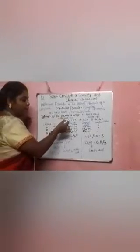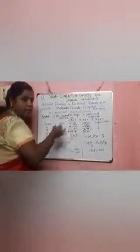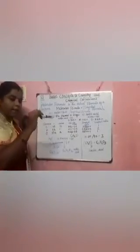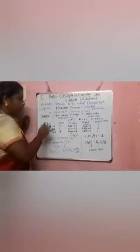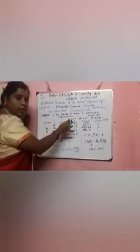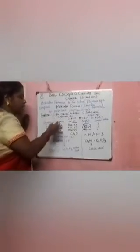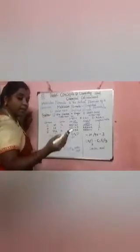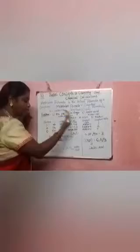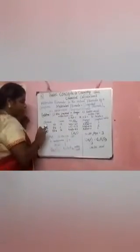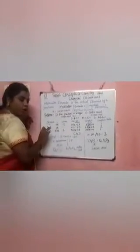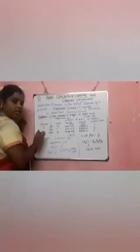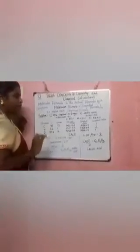To find the molecular formula, first tabulate the elements present in the compound: carbon, hydrogen, and oxygen. Write down the percentage of each element as given in the question. Then write the atomic mass of each element: mass of carbon is 12, mass of hydrogen is 1, and mass of oxygen is 16.